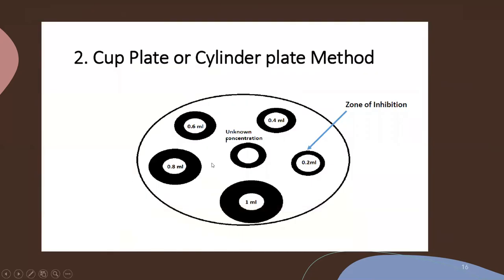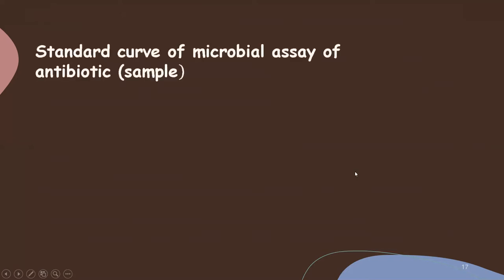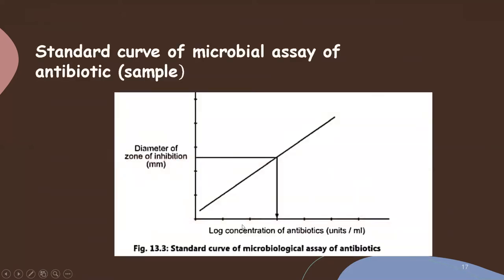Accurately measure the diameter of the zone of inhibition and calculate the result. Plot a graph of zone of inhibition versus log concentration of antibiotic to determine the unknown concentration. You will mark the zone of inhibition with a marker and measure it. Based on the zone of inhibition of the test antibiotic, interpolate on the x-axis to get the concentration.